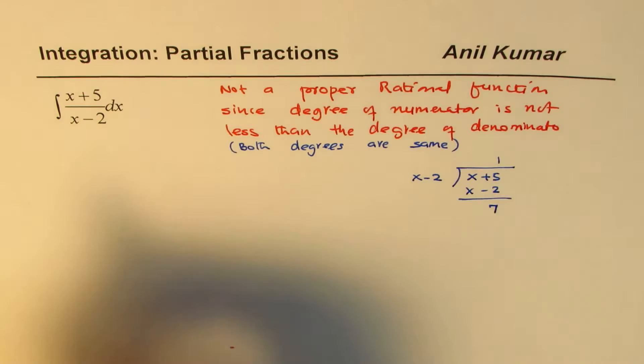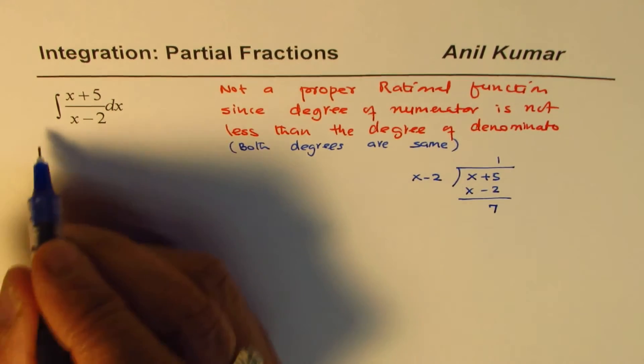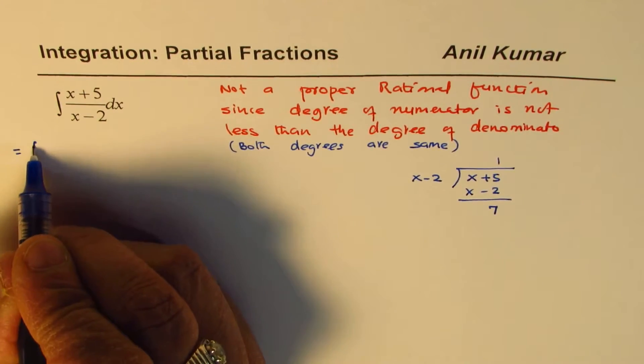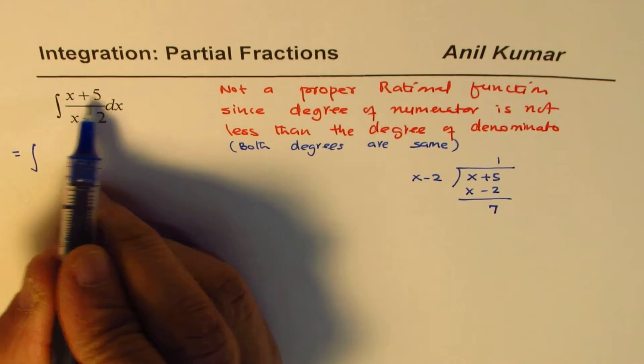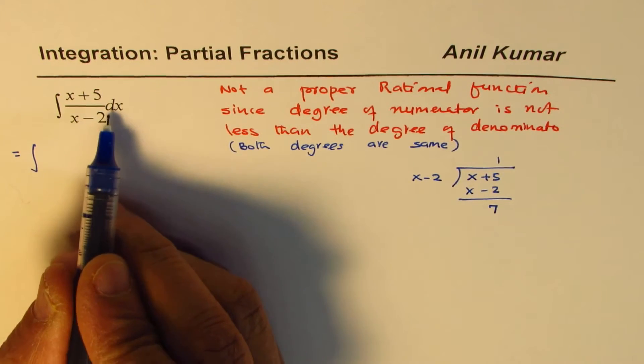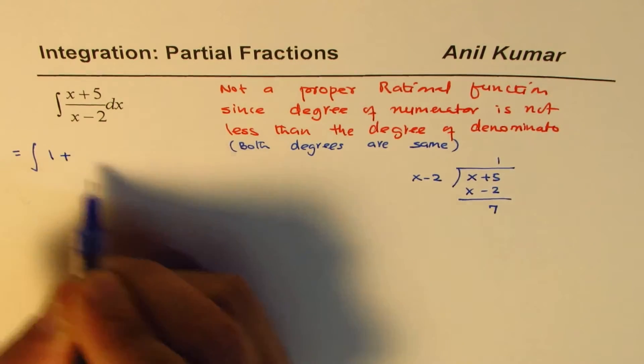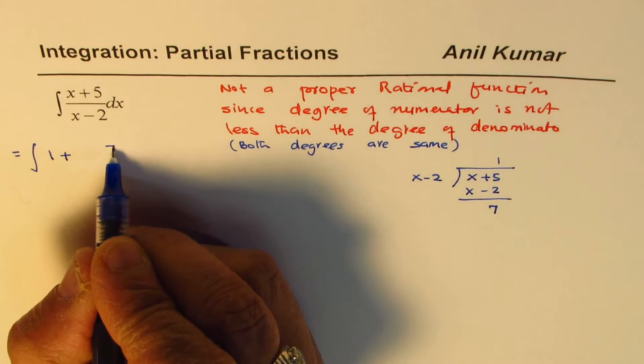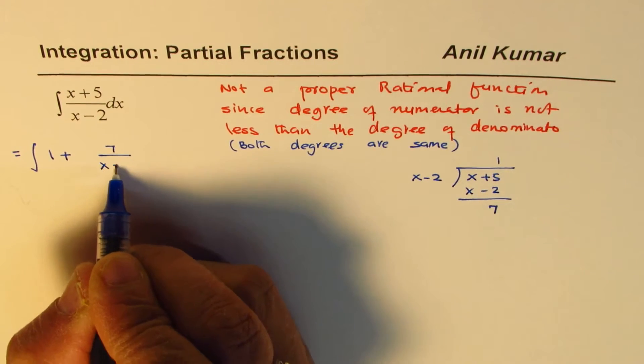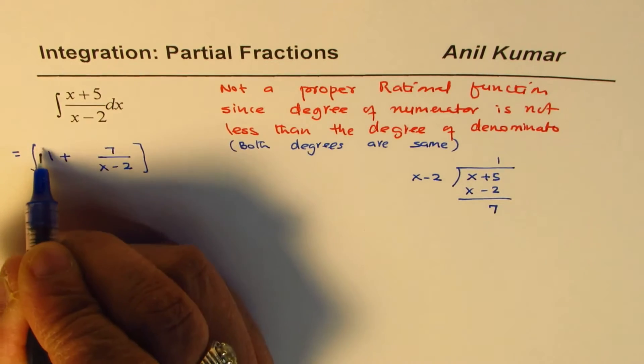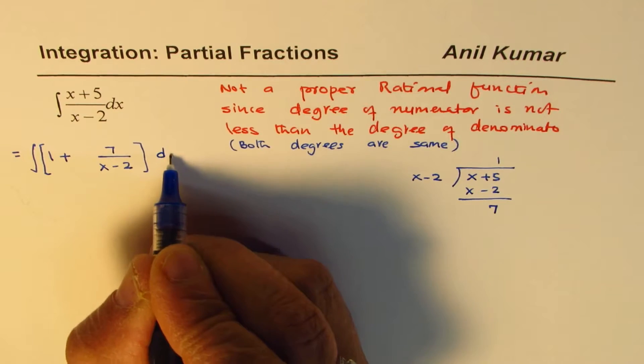So we could write this integral as combination of these. Do you see that? So we can write this as equals to integral of, instead of x plus 5 over x minus 2 dx, we could write this as 1 whole plus the remainder, 7 over x minus 2. So that is how we could write that rational function.